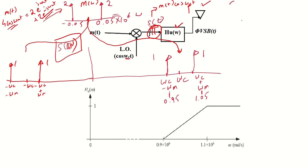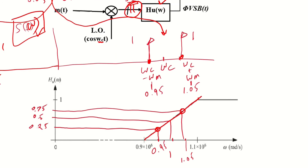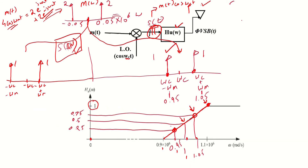Next, the vestigial sideband filter is drawn. It starts at 0.9 mega radians per second. S(ω) has a delta function at 0.95 and another at 1.05. Since the filter is linear between 0.9 and 1.1, the key values are: at 0.9 we have 0, at 1.1 we have 1, with intermediate values 0.25 at 0.95 and 0.75 at 1.05.